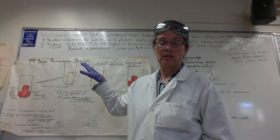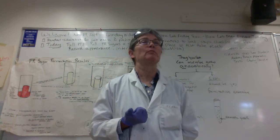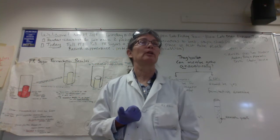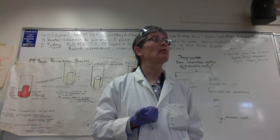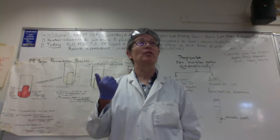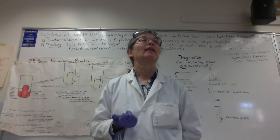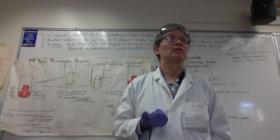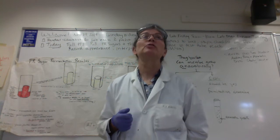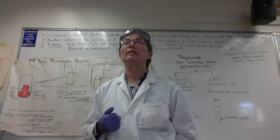So what the PR sugar tubes can tell us, first of all, is: was the sugar fermented? If the sugar was fermented, a typical fermentation end product is acid, so the pH goes down and phenol red turns yellow. If your PR sugars appear yellow after incubation, your microbe can ferment that specific sugar. And if your microbe also made gas, you'll look for a gas bubble in the Durham tube. You can see this clearly in the E. coli tubes.